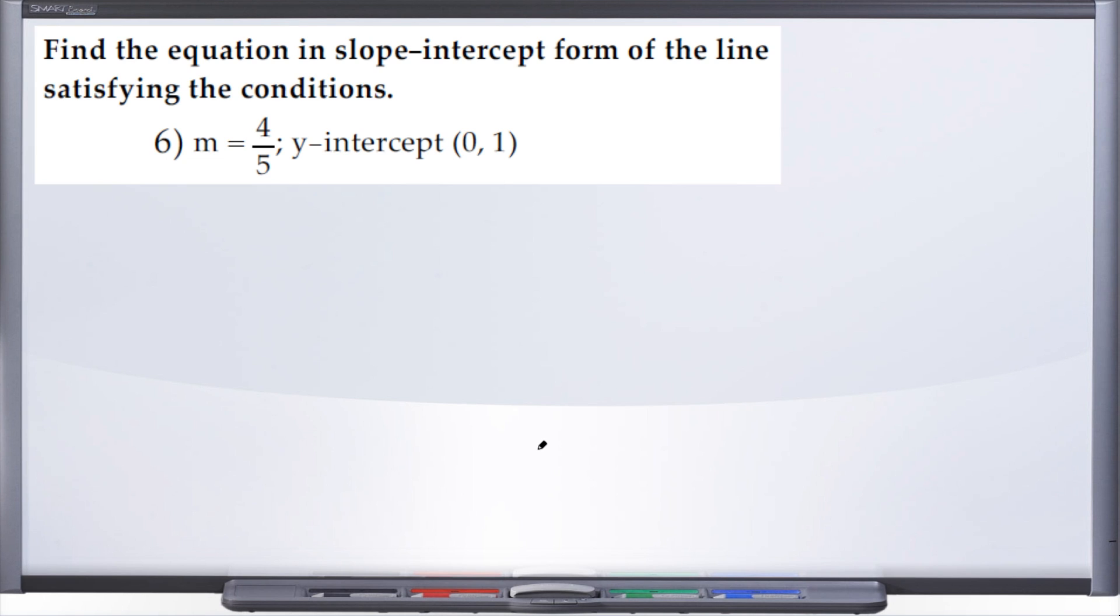So with number six, the directions are to find the equation in slope-intercept form of the line satisfying the conditions. All right, so we've been given slope is 4 over 5 and the y-intercept is 0 comma 1.